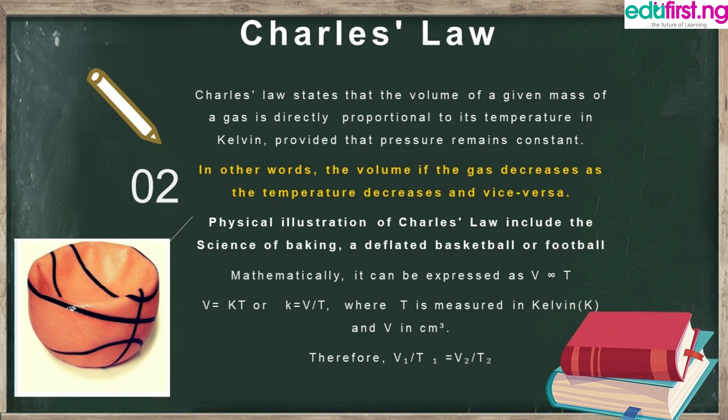The mathematical expression of Charles' Law: volume is directly proportional to temperature, so V ∝ T, which gives V = kT. This introduces the constant k, or equivalently k = V/T, where T is measured in Kelvin and V in cm³. We can relate this as V₁/T₁ = V₂/T₂.